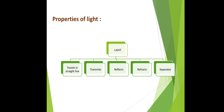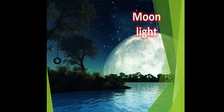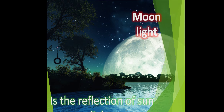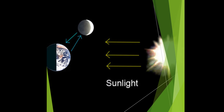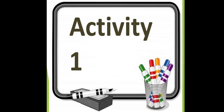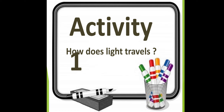Light has five properties: traveling in a straight line, transmission, reflection, refraction, and separation. From the previous grades — why does the moon seem shiny? The moon reflects sunlight. Excellent!